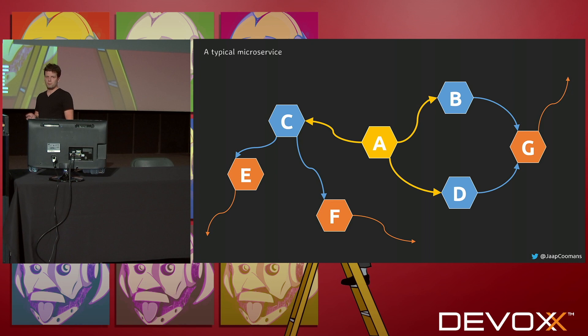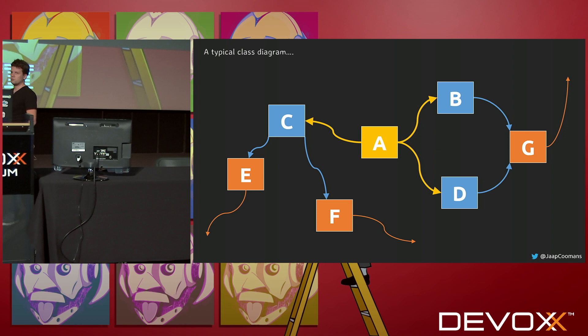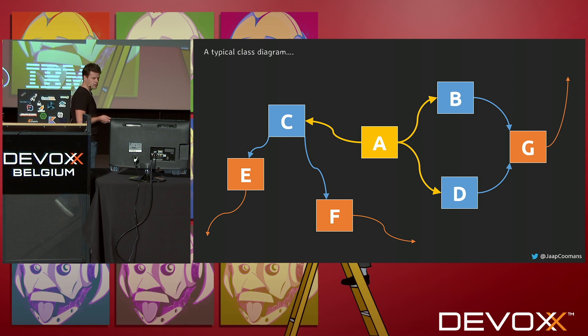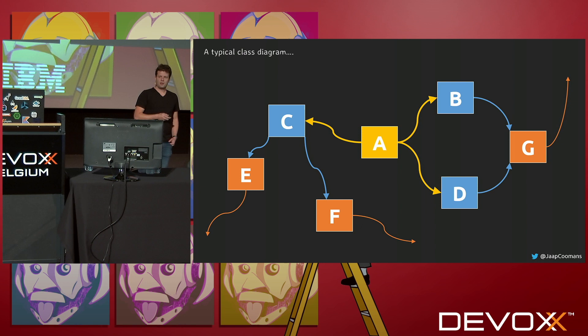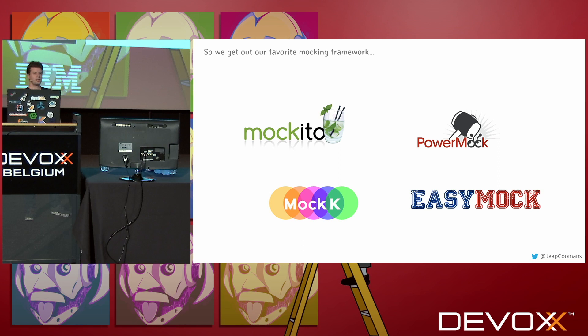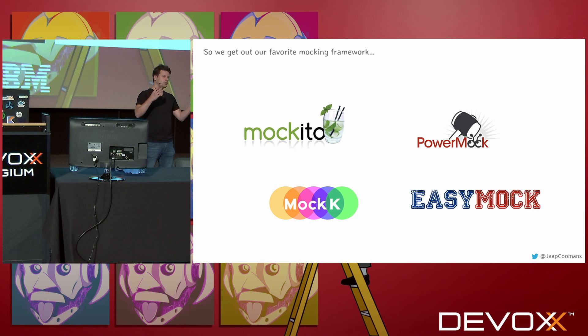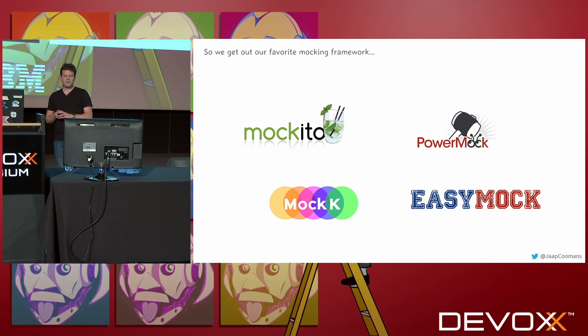To answer that question I'm going to make a big change to this diagram. All the hexagons will become rectangles — and now suddenly it's a class diagram. The answer to 'how are we going to test this?' becomes very clear. If I say we need to test class A, a little battle begins: which mocking framework to use? I personally prefer Mockito, but there's also PowerMock, EasyMock, and if you're doing Kotlin you might like MockK. This is part of our standard toolset as developers — we do unit tests and mocking.